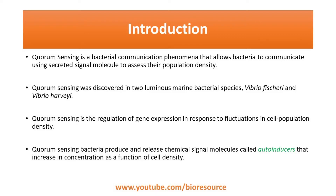Quorum sensing is the regulation of gene expression in response to fluctuations in cell population density. Quorum sensing bacteria produce and release chemical signal molecules called autoinducers that increase in concentration as a function of cell density. The detection of a minimum threshold stimulatory concentration of autoinducers leads to the alteration in gene expression.